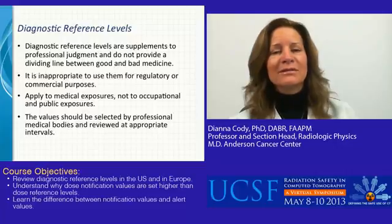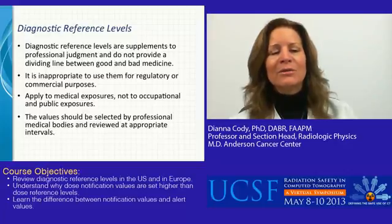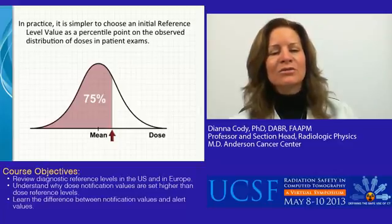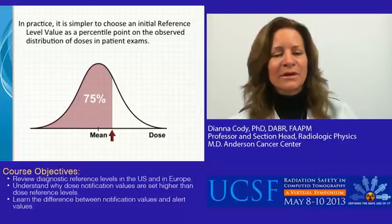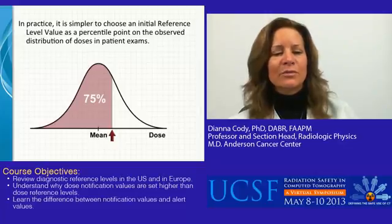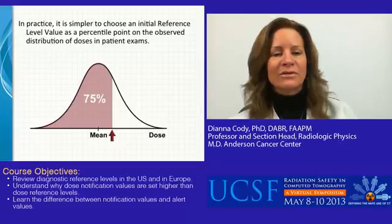Diagnostic reference levels are supplements to professional judgment and do not provide a dividing line between good and bad medicine. It is quite inappropriate to use them for regulatory or commercial purposes, and they apply specifically to medical exposures, not to occupational or public exposures. These values should be selected by professional medical bodies and reviewed at appropriate intervals. In practice, it's simpler to choose an initial reference level value as a percentile point on the observed distribution of doses in patient exams. Here we see a histogram of dose values that have been collected, where the mean and the minimum and maximum levels are shown.